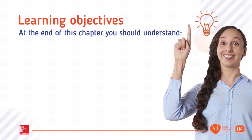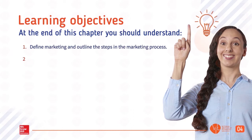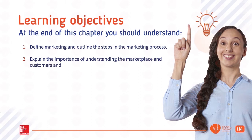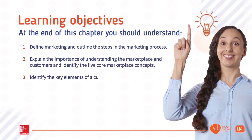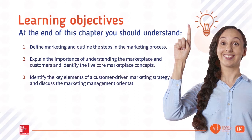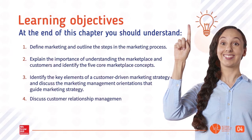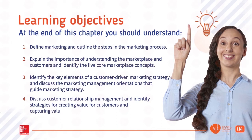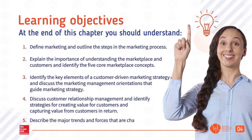Chapter 1. Learning Objectives. At the end of this chapter you should understand: 1. Define marketing and outline the steps in the marketing process. 2. Explain the importance of understanding the marketplace and customers, and identify the five core marketplace concepts. 3. Identify the key elements of a customer-driven marketing strategy, and discuss the marketing management orientations that guide marketing strategy. 4. Discuss customer relationship management, and identify strategies for creating value for customers and capturing value from customers in return. 5. Describe the major trends and forces that are changing the marketing landscape in this age of relationships.